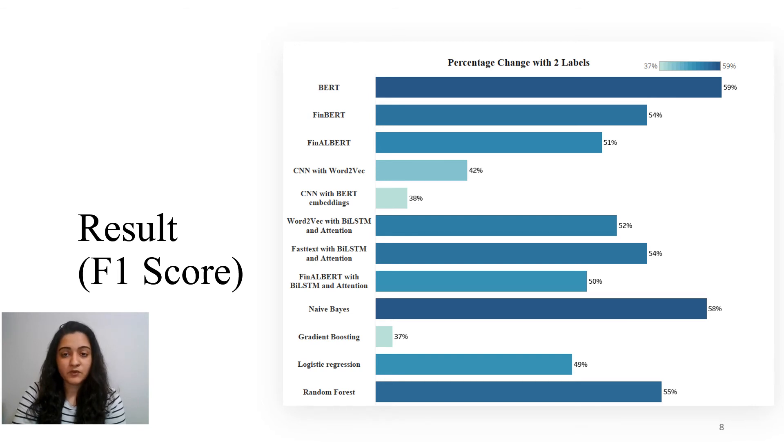We train three types of models, the transformer-based, word embeddings with neural networks and traditional machine learning models, which make use of TF-IDF vectorizer for feature extraction. As we can see, for the data labeled by a percentage change with two labels, the transformer-based model BERT performs the best with F1 score as 59%. In word embeddings with neural networks, FastText with BiLSTM performs well with F1 score as 54%. And in traditional models, Naive Bayes model performs the best with F1 score of 58%. Overall, in this technique, BERT model gives the best result.